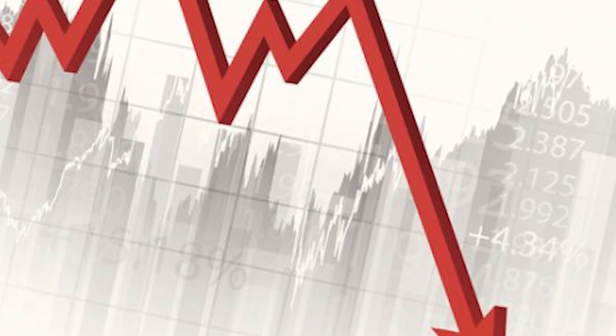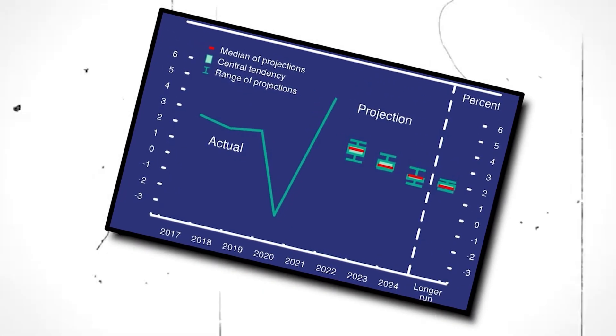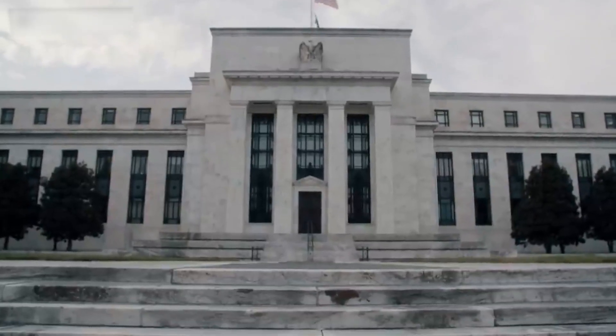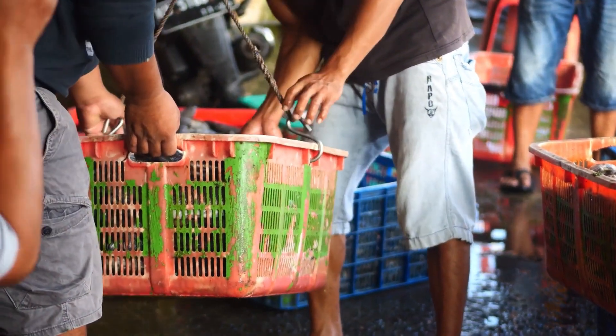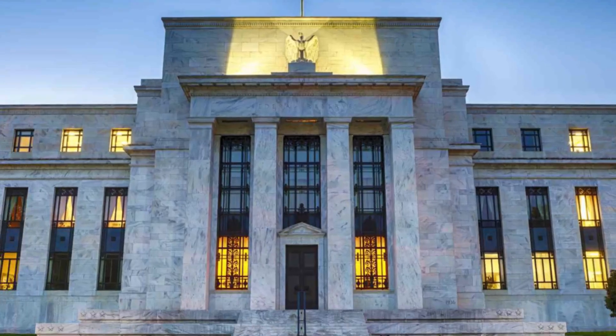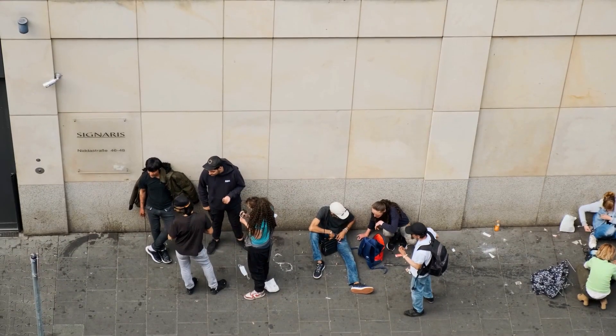Considering the higher interest rate environment and the lag effect, a slowdown in the economy is anticipated, though the exact extent remains to be seen. All of this is interconnected with unemployment — the Federal Reserve has highlighted that a tight labor market is contributing to wage inflation. In February, unemployment rose from 3.4% in January to 3.6%. The Fed has emphasized there will be a softening in labor markets, with unemployment predicted to reach around 4% this year.